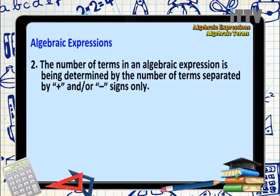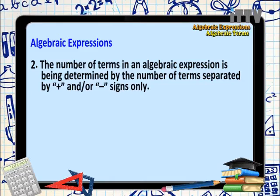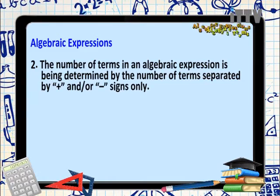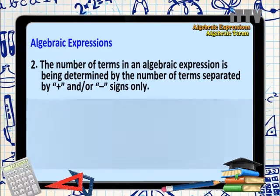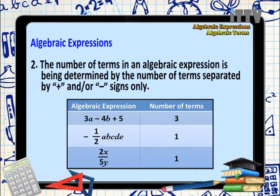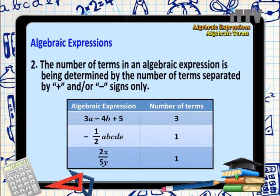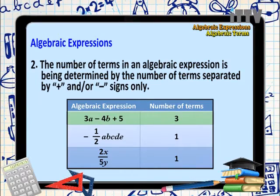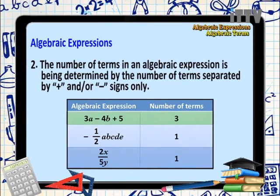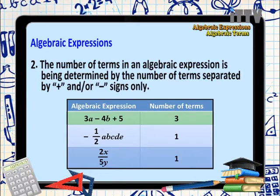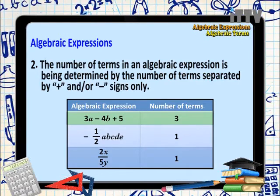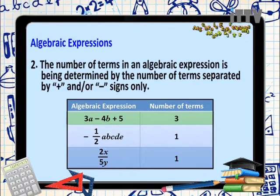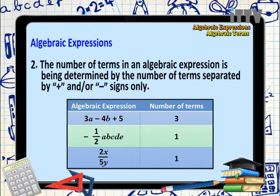The number of terms in an algebraic expression is being determined by the number of terms separated by plus and or minus signs only. You can see the table below shows you an example of the number of terms in the algebraic expressions. The first algebraic expression we have 3A minus 4B plus 5.